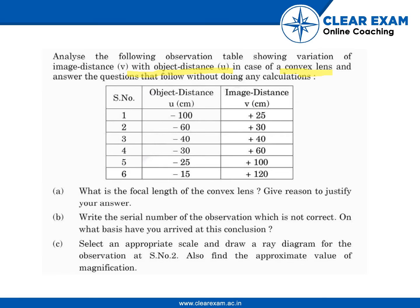This is the given table that consists of object distance and image distance. First question: What is the focal length of the convex lens? Give reason to justify your answer. Second: Write the serial number of the observation which is not correct. On what basis have you arrived at this conclusion? Last part: Select an appropriate scale and draw a ray diagram for observation at serial number 2, and also find the approximate value of magnification.